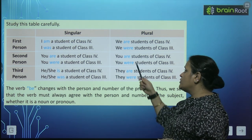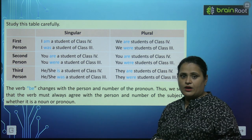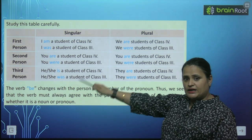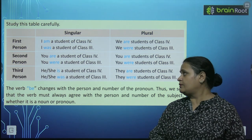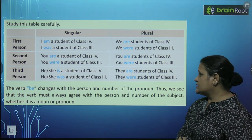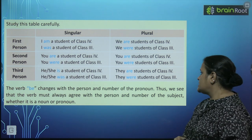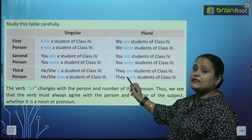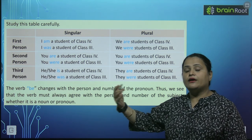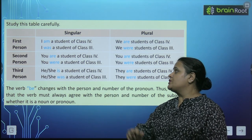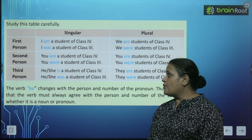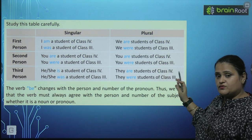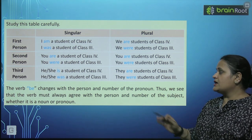Second person mein singular aur plural dono mein 'you' rahega. You are a student of class fourth. You are students of class fourth. You were a student of class third. You were students of class third. Third person singular hota hai he, she, aur plural mein they. He/she is a student of class fourth. He/she was a student of class third. They are students of class fourth. They were students of class third.